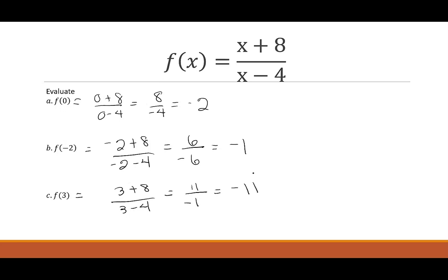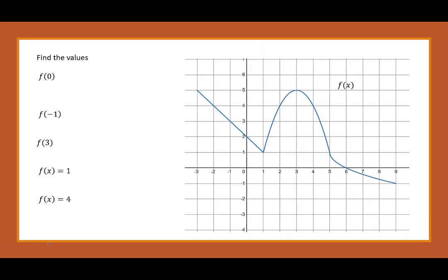To evaluate graphs of functions, we'll look at points on the graph. Given the x value, we want to state the y value. So we're going to start with x equals 0. When I look up at the graph, I see a y value of 2. That tells me f of 0 is 2. When I move over to x being negative 1, I look up on the graph and see a y value at 3. So f of negative 1 would be equal to a positive 3.